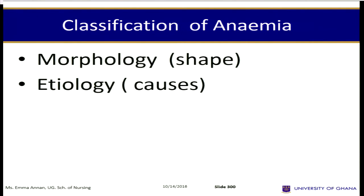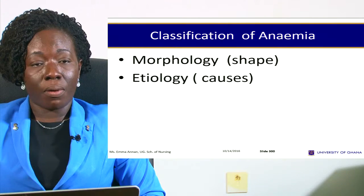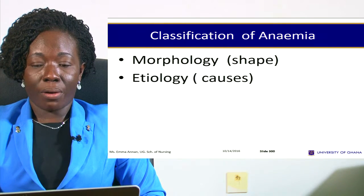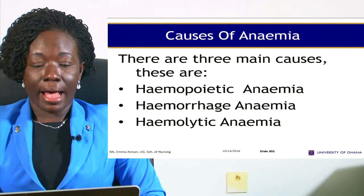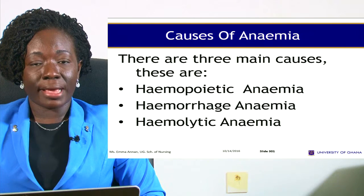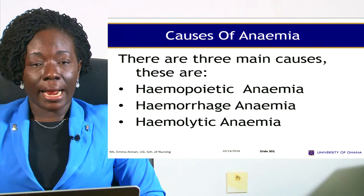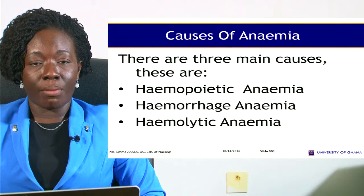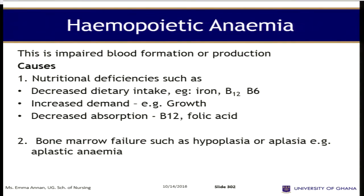Classification of anemia can be according to the shape or the causes. There are three causes: hemopoietic anemia, hemorrhagic anemia, and hemolytic anemia. We'll look at them one by one.